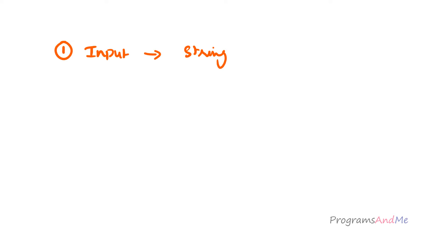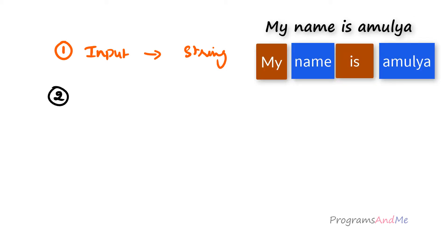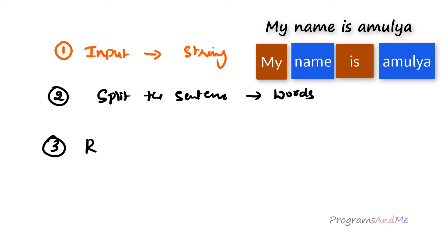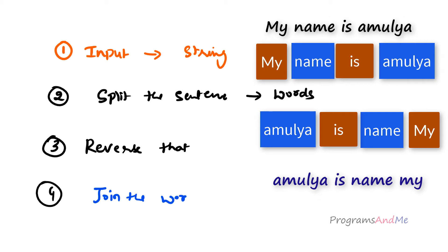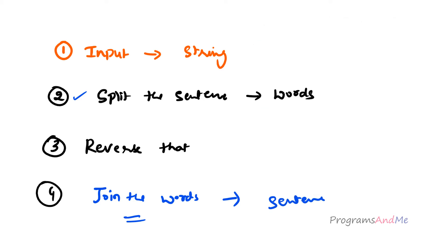To write this program, the steps are: first, take input from the user — a string. Next, get the individual words by splitting the sentence. Then reverse those words. Finally, join the words back to form a sentence and print it. These are the steps of our program.